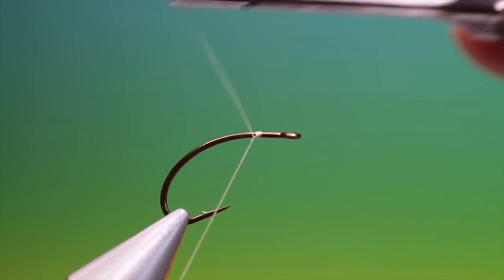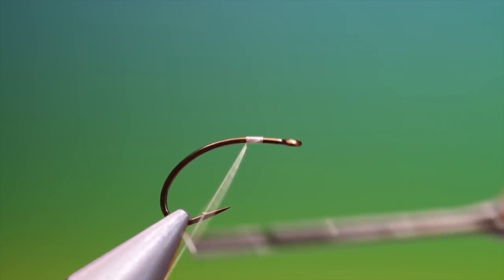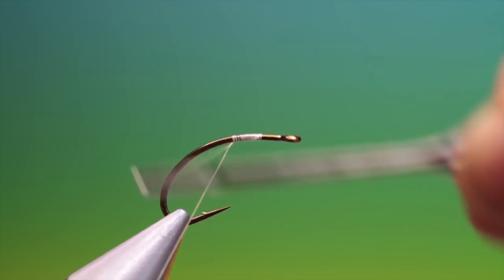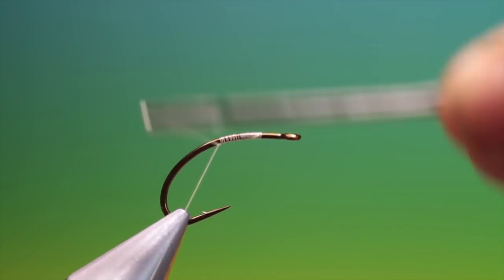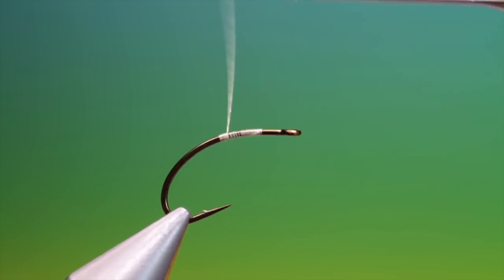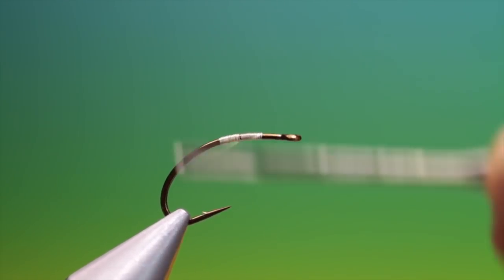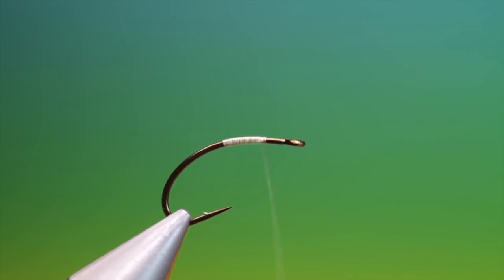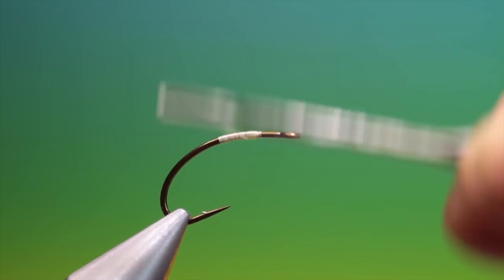I'll just put some tying thread on. We want to go back a little, not too far, about a third of the hook length and then we can go back up. This will just start to create the taper we want to achieve and then back down again.